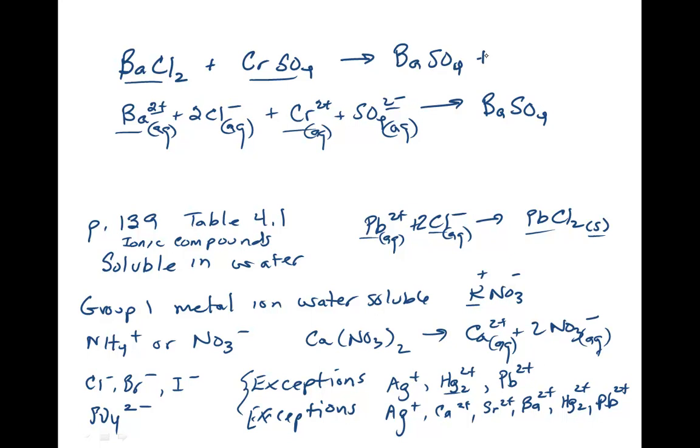And then the other product would be chromium chloride, chromium 2 chloride. So what we need to do is evaluate these two substances or compounds to see if they're water soluble or not. So we look at the sulfate and we see that barium sulfate is not water soluble. So we put a solid here to say it's a precipitate. It's a solid, it's not going to stay in solution.